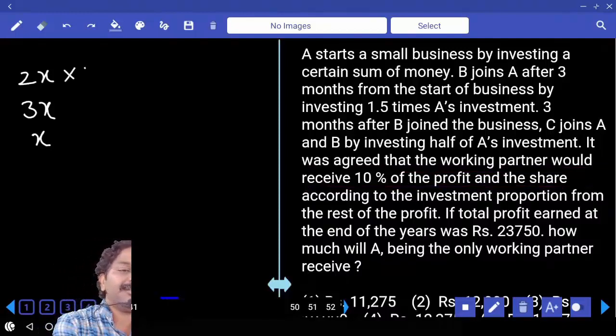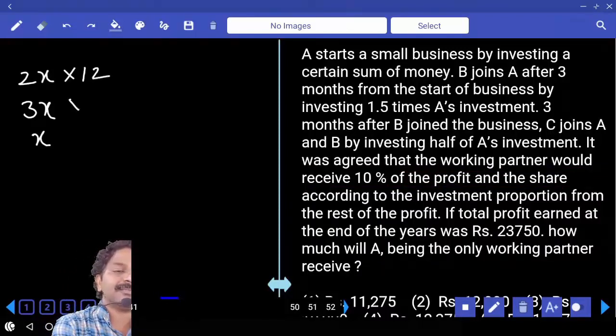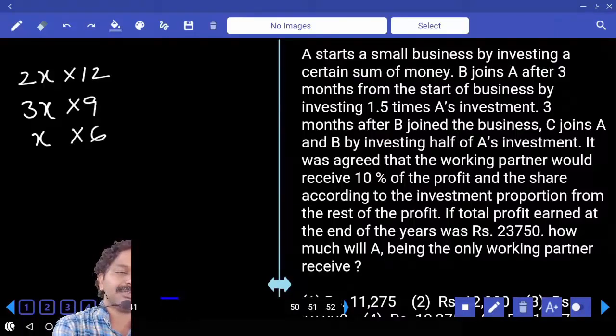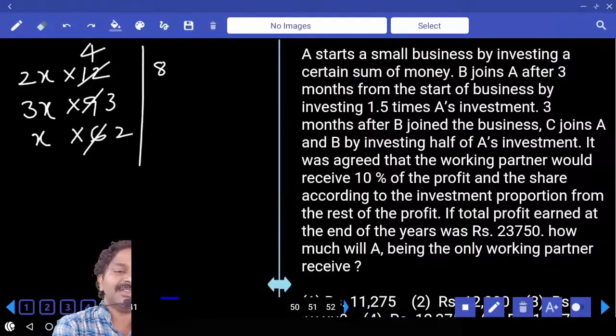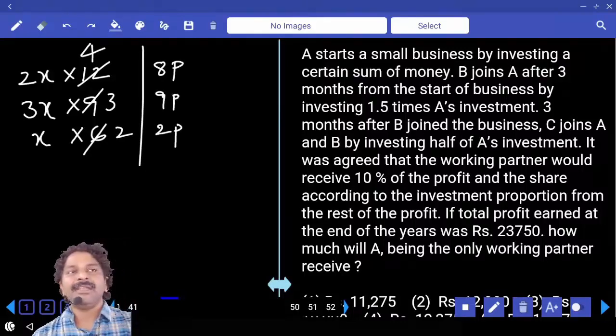A is there for 12 months, B is there for 9 months and C for 6 months. 2x times 12 is 24, 3x times 9 is 27, x times 6 is 6. Simplifying: 8, 9, 2. How many parts we have? 19 parts.